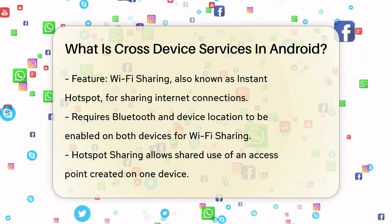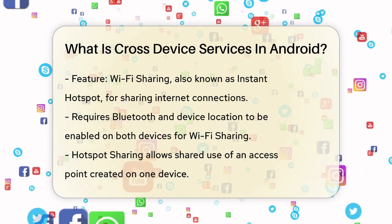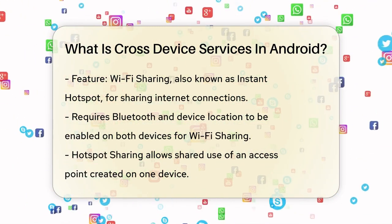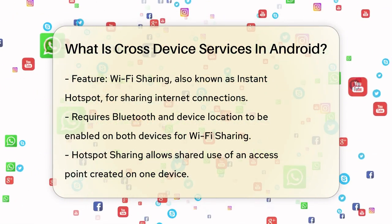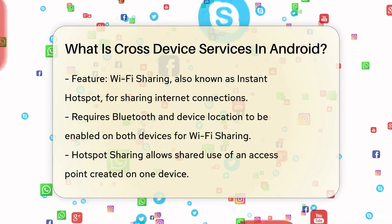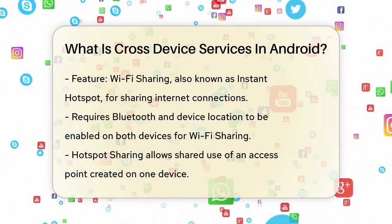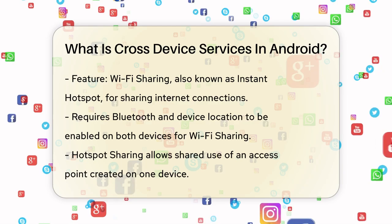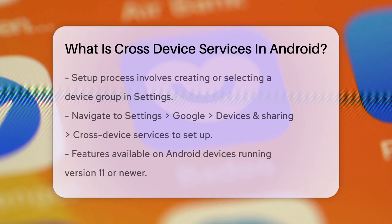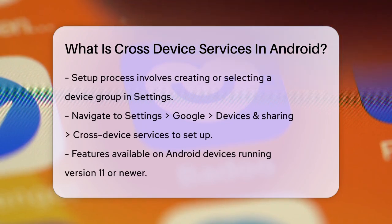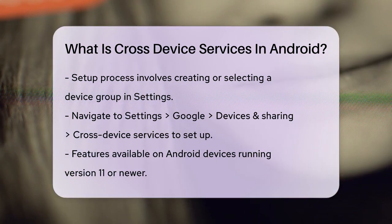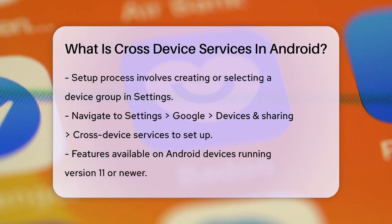Another feature is Wi-Fi sharing, or what Google calls Instant Hotspot. This allows you to share your phone's internet connection with other Android devices or Chromebooks linked to the same Google account. To use this, you need to have Bluetooth and device location turned on on both devices. Hotspot sharing is similar but more specific — it enables the shared use of an access point created on one device, making it easier for your other devices to stay connected to the internet.